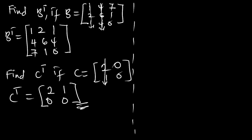There are some identities for the transpose that are true. The first identity: when you add two matrices A and B and transpose the result, it is equal to the summation of the individual transposed matrices — that is, (A + B) transpose equals A transpose plus B transpose. We will prove all this and see if it is true.